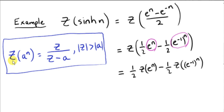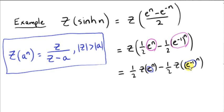In the last video, we considered the Z-transform of the geometric sequence a to the power of n, and saw that it's given by Z over Z minus a, valid provided the magnitude of Z is greater than the magnitude of a. We will apply that result here. For the first sequence e to the n, we replace a with e. For the second sequence, a is e to the minus 1, which is why we write e to the minus n as e to the minus 1 to the power of n. These are our constants for the sequences.